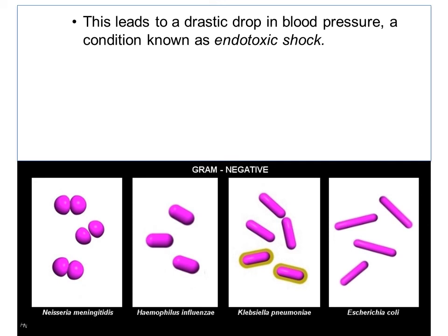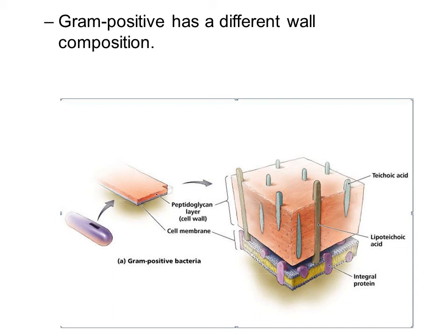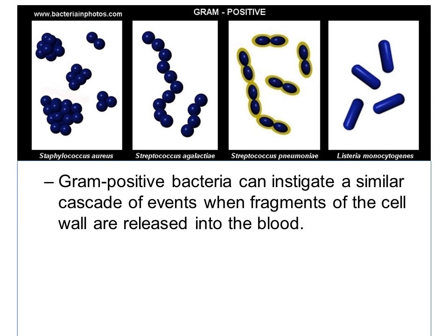The slide below shows several examples of gram negative bacteria. Bacteremia caused by gram positive bacteria is going to be treated a little differently by the body. The composition of the cell wall of gram positive is different — gram positive have multiple peptidoglycan layers, up to 40 layers. Gram positive bacteria can instigate a similar cascade of events when fragments of the cell wall are released into the blood.